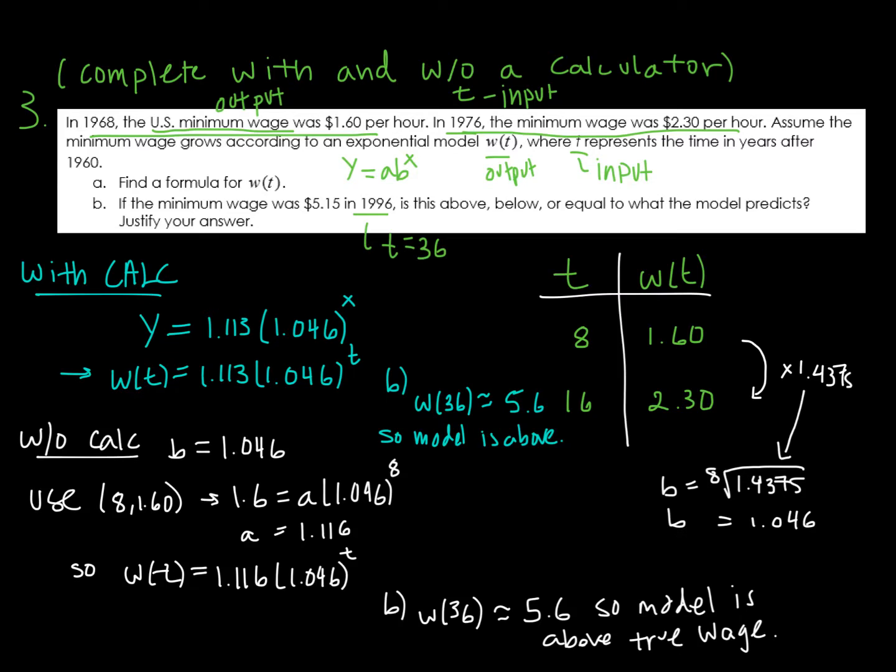All right, a lot going on here. I've identified the input variable t, the output variable w. W is the U.S. minimum wage, and t is the number of years after 1960. So I've made a little table here. And then there are two ways that I can figure out my function. The first is with a calculator. I know I'm going to fit an exponential model, so I can go put these values into my calculator and have it find a function for me. And if I do so, I'll end up with this here. The output y is w, and the input is the variable t. One thing to note here is that t is 8 and then 16, because that's the number of years after 1960. So 1968 and 1976.